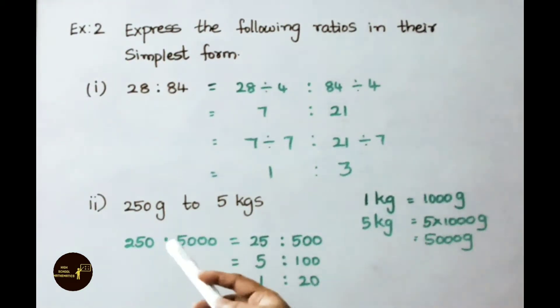See the second sum 250 grams to 5 kgs. To write the simplest form of the ratio both the units should be same units. That's why we are converting kilograms to grams. 1 kg means 1000 grams we know. So 5 kgs means 5 into 1000 grams that is 5000 grams.